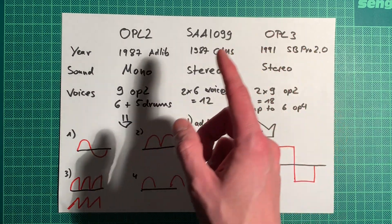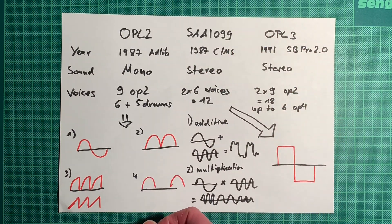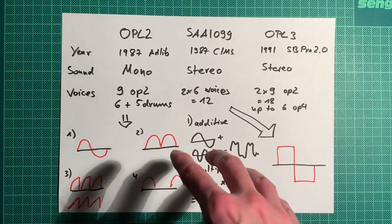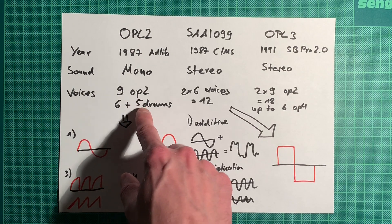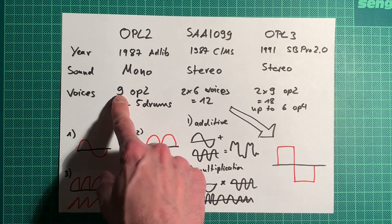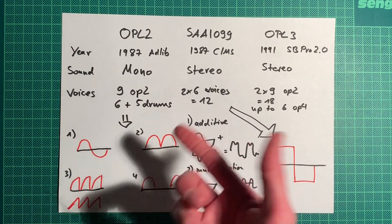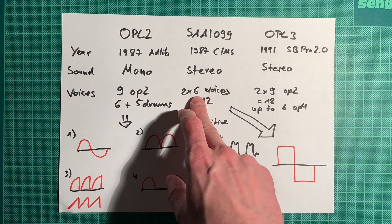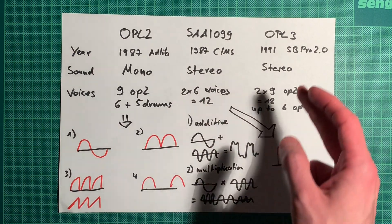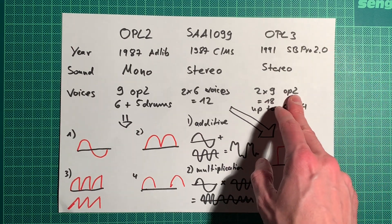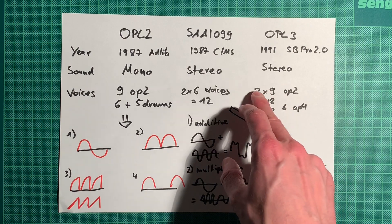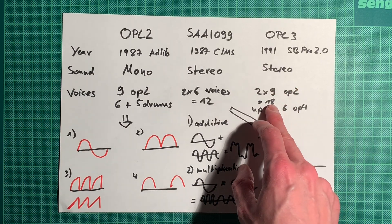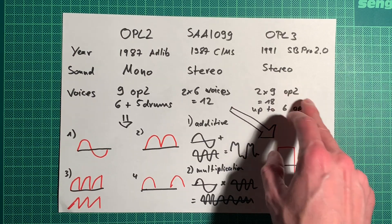The OPL3 arrived around 1990 or 1991 and also added stereo sound for its FM synthesis voices. The OPL2 had nine two-operator voices — or six melodic voices plus five drum sounds. The SAA had six voices per chip, stereo, making 12 voices in total. The OPL3 essentially doubled that to 18 melodic voices, and you could also use four-operator voices — up to six of those, combined with drum sounds.